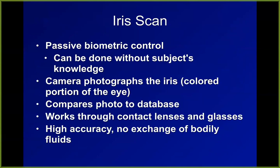An iris scan would be much better. It just takes a high-resolution photograph of your face — you don't have to be terribly close to the camera. It looks at the colored part of your eye, which has rings, striations, dots, and a shape unique to each person. These are now being put in airports so they can take pictures of everybody as they go by, to see if you're on the do-not-fly list when you're just walking around.